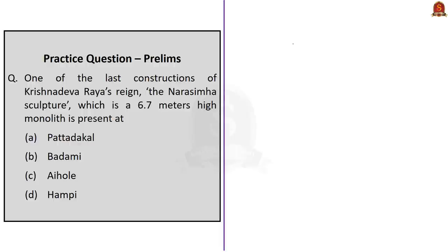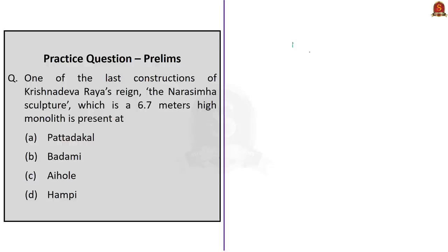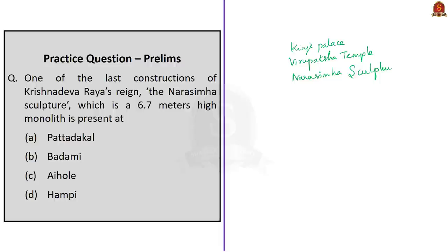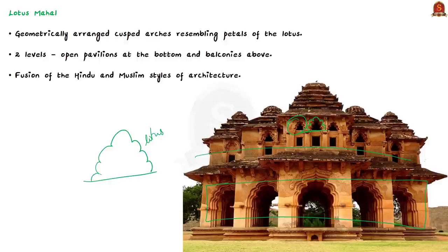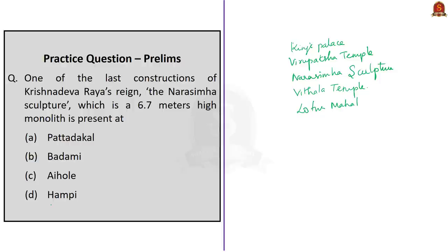In this discussion, we covered the Vijayanagara Empire and the UNESCO World Heritage Site — the Group of Monuments at Hampi. Key structures include: the King's Palace (largest enclosure), the Virupaksha Temple (nine-storeyed gopuram), the Narasimha sculpture (6.7-meter-high monolith), the Vitthala Temple (famous for its stone chariot visible on the 50-rupee note), and the Lotus Mahal (arches resembling lotus petals). With these points in mind, let us move on to the next news article.